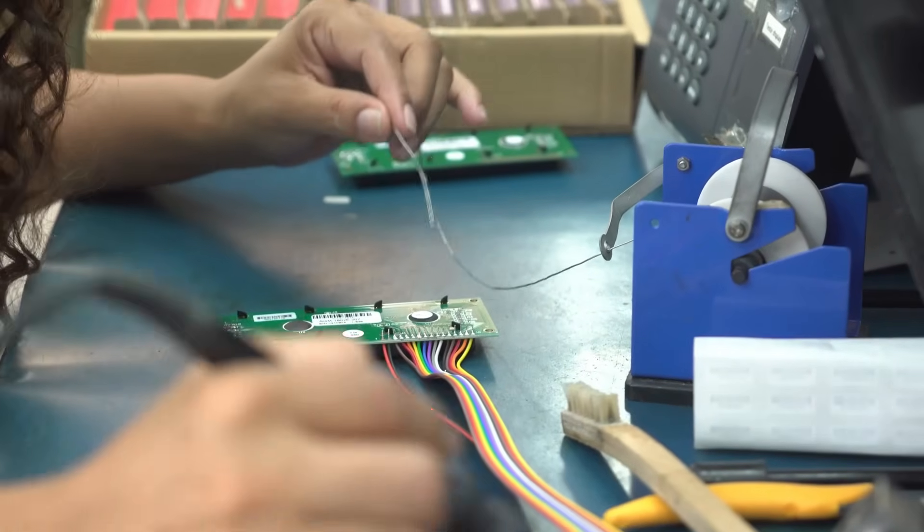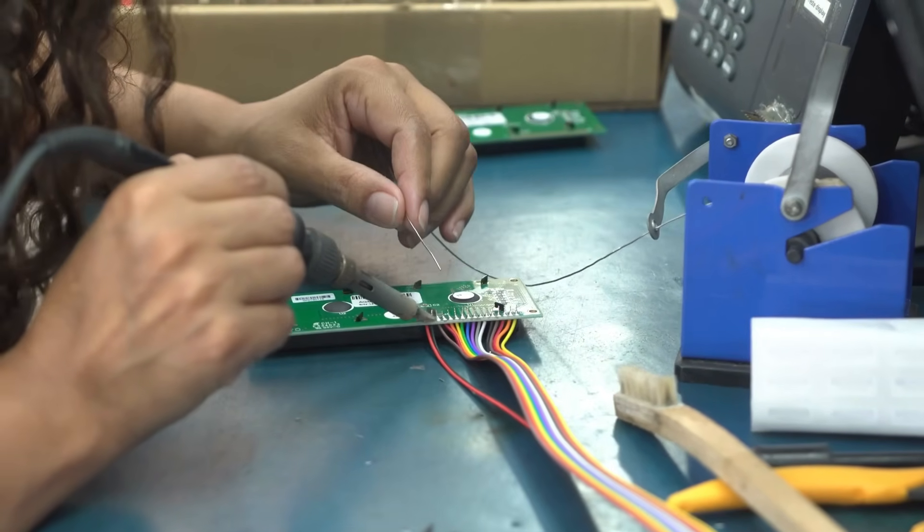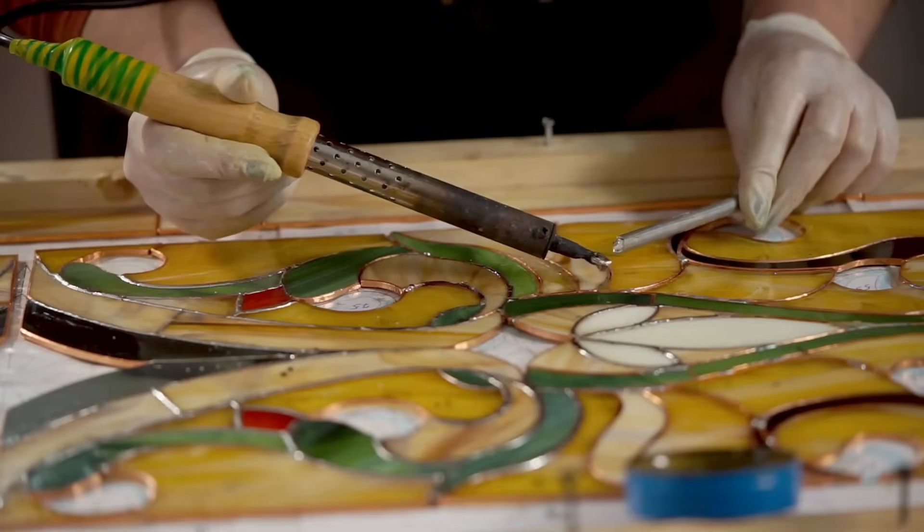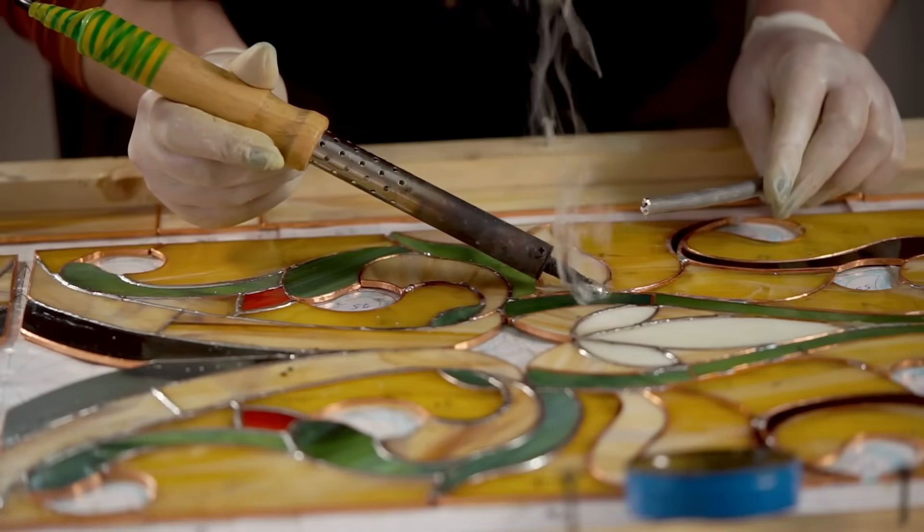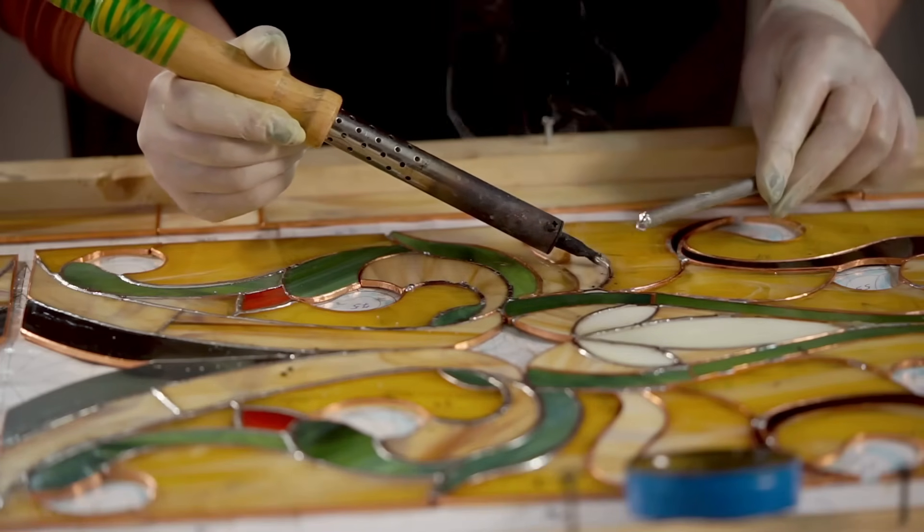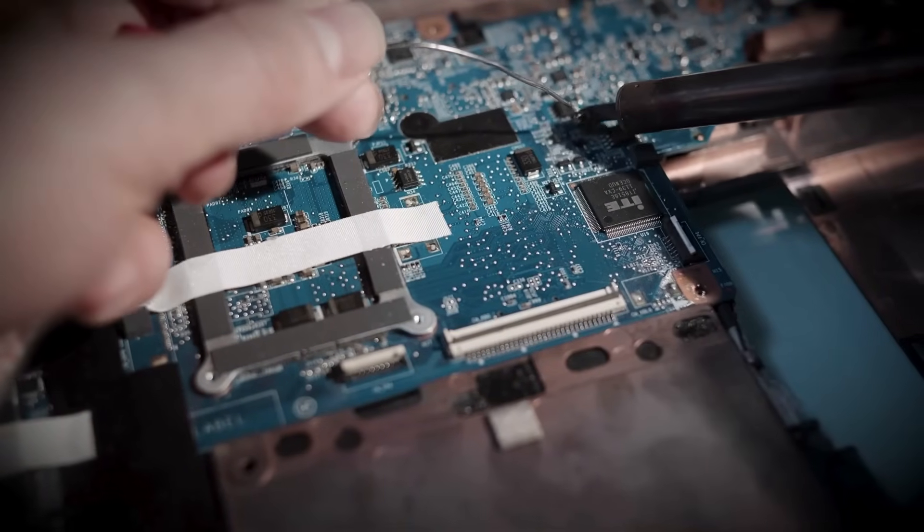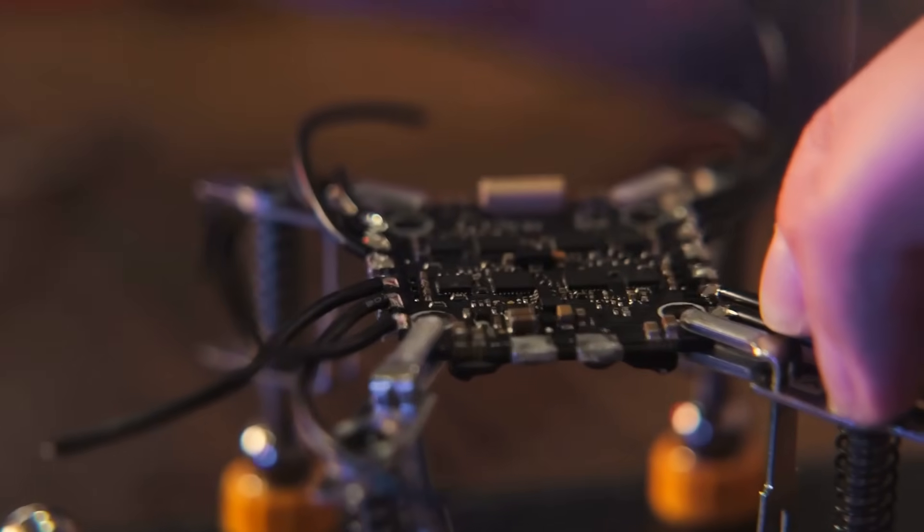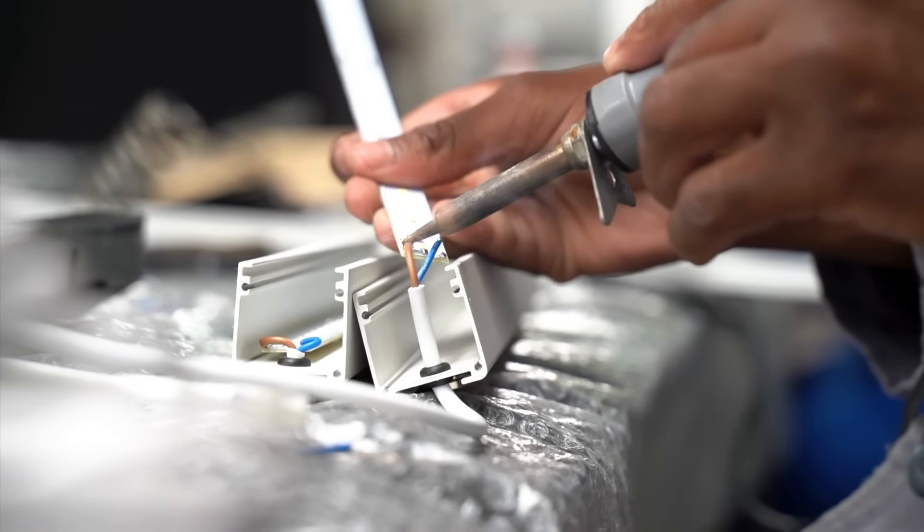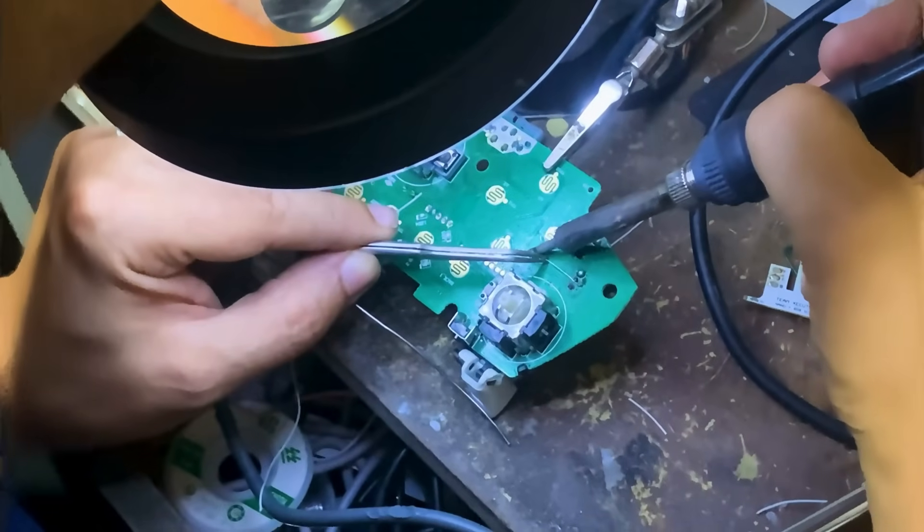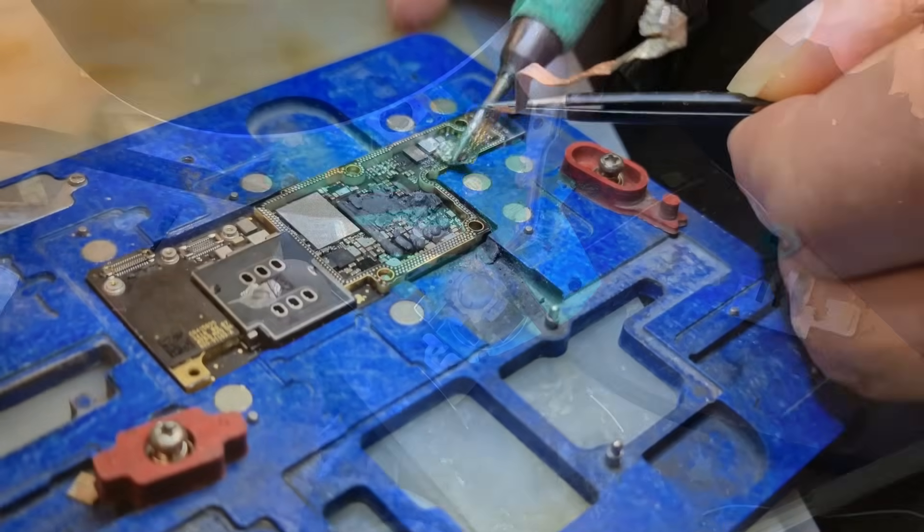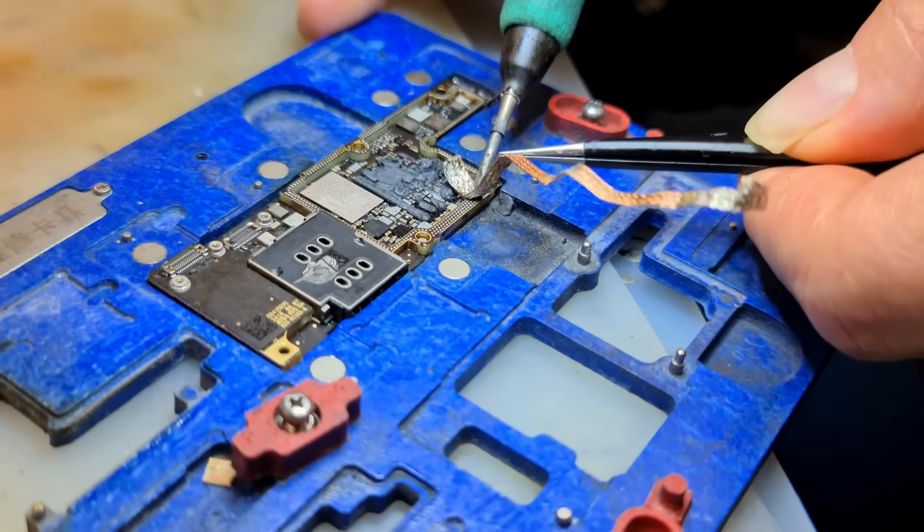In many ways, the soldering iron is a perfect example of a tool that looks simple, but performs tasks that are incredibly important. Its ability to join metal without brute force, without flames, and without melting the entire workpiece is what made modern electronics possible. Whenever someone repairs a circuit board, assembles a drone, builds a custom keyboard, or restores an old radio, the soldering iron is the silent partner in that creation. And despite the rise of automated manufacturing, hand soldering remains an essential skill, one that blends science, precision, and craftsmanship.